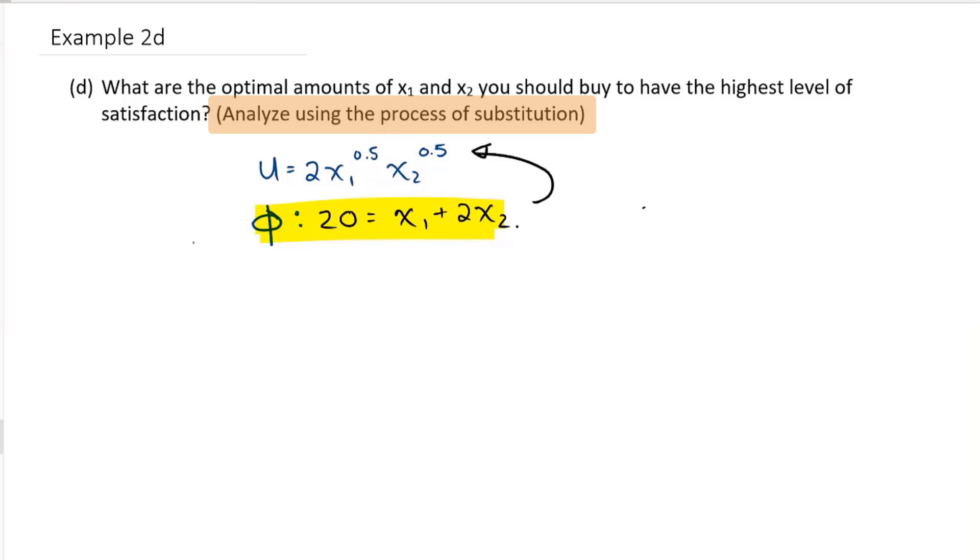Put the limitation in this function. So we already established that X2 is equal to 10 minus 0.5 X1. So we're going to substitute that into this equation. So now I'm going to have utility is equal to 2X1 to the power of 0.5, and I'm going to substitute 10 minus 0.5 X1 for my X2.